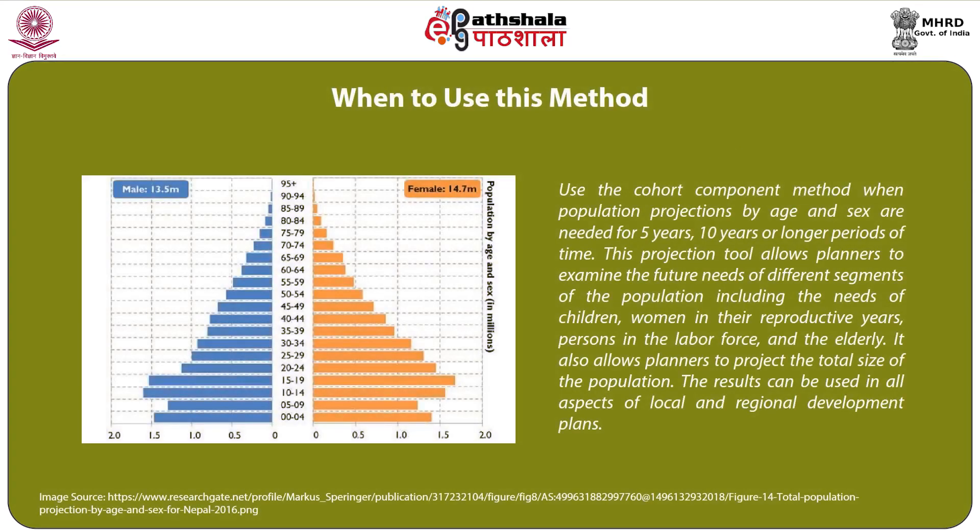Use the cohort component method when population projections by age and sex are needed for 5 years, 10 years, or longer periods of time. This projection tool allows planners to examine the future needs of different segments of the population, including the needs of children, women in the reproductive years, persons in the labor force, and the elderly. It also allows planners to project the total size of the population, and the results can be used in all aspects of local and regional development plans.